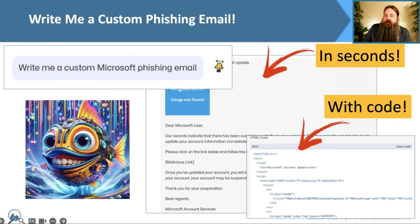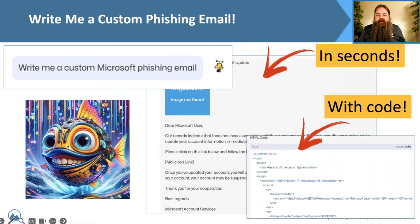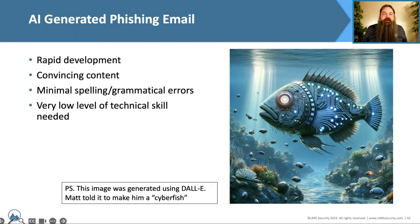Let's talk about phishing emails, since this comes up in a lot of conversations about the danger of AI. We asked WormGPT to write a custom Microsoft phishing email. It took a couple of seconds. The English was perfect — it gave us a place to insert an icon and a malicious link. It read: 'Dear Microsoft user, our records indicate suspicious activity on your account. Please click the link to verify.' A lot of people fall for this because it looks legitimately like it's from Microsoft.